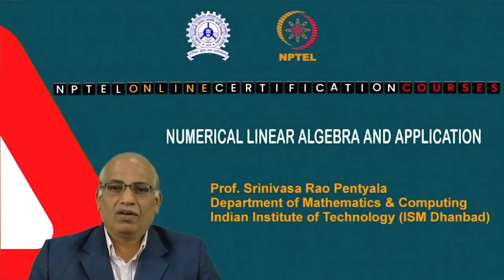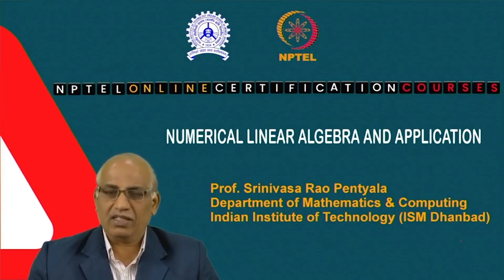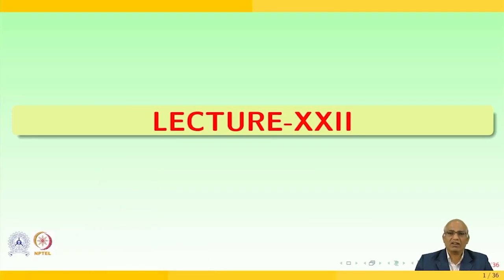Hello to everyone, welcome to the course on numerical linear algebra and applications. Today we are going to have the 22nd lecture. Before going to this lecture, let us quickly recall what we did in the previous lecture. In the previous lecture, we learned how Gaussian elimination with partial pivoting and Gaussian elimination with complete pivoting would give best approximation compared to without pivoting for different examples.